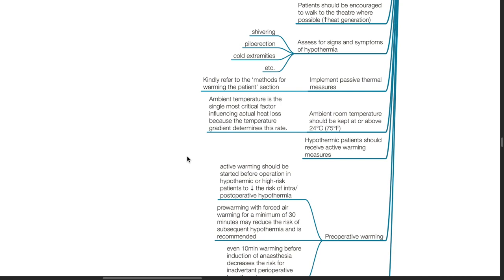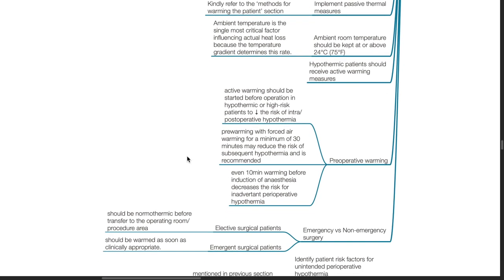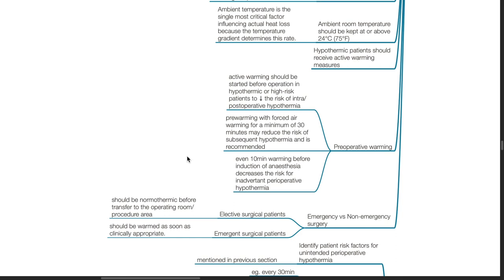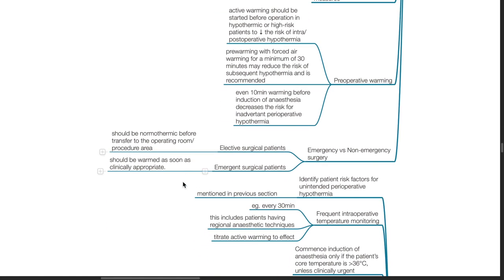Ambient temperature is the single most critical factor influencing actual heat loss because the temperature gradient determines this rate. Hypothermic patients should receive active warming measures. Pre-operative warming: active warming should be started before operation in hypothermic or high-risk patients to reduce the risk of intraoperative or postoperative hypothermia. Pre-warming with forced air warming for a minimum of 30 minutes may reduce the risk of subsequent hypothermia and is recommended. Even 10 minutes of warming before induction of anesthesia decreases the risk for inadvertent perioperative hypothermia. For elective surgical patients, they should be normothermic before transfer to the operation room. For emergency surgical patients, they should be normothermic as soon as clinically appropriate.